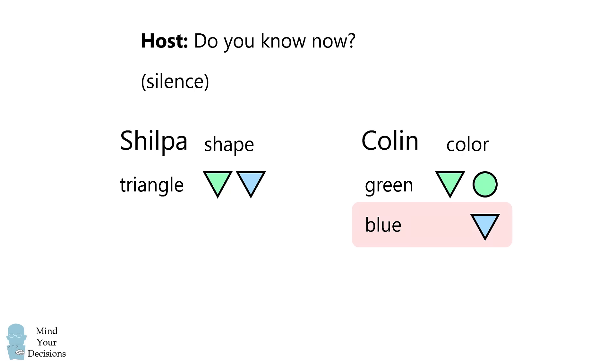Similarly, if Colin had been told blue initially, then by this stage, he would be able to figure out the prize is under the blue triangle. But again, he was silent, so we can eliminate this. He was not told blue initially.